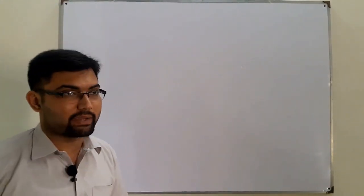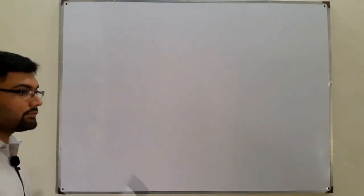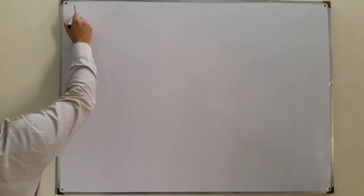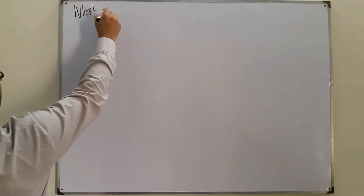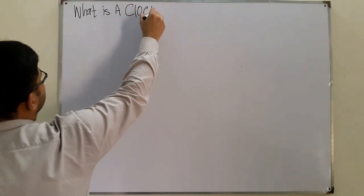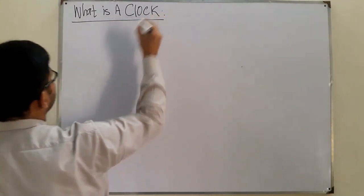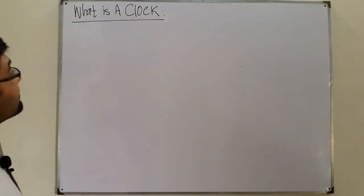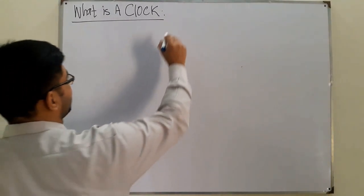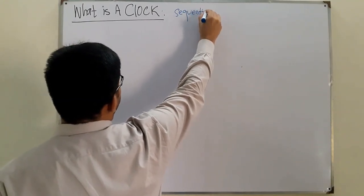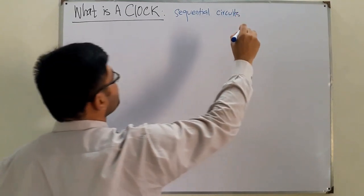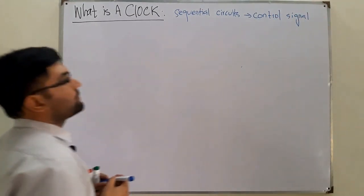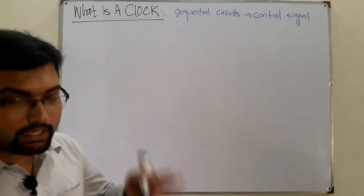Today we see one of the basic topics we will be needing in flip-flops, counters, registers, and so on. The basic thing you need to know first is: what is a clock? This is a very basic thing. You know a clock tells you the time, but here in sequential circuits, the clock is used as a control signal for the inputs.